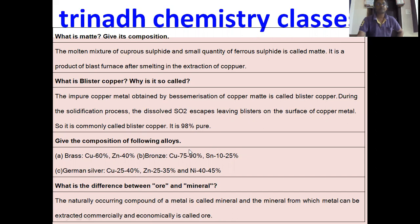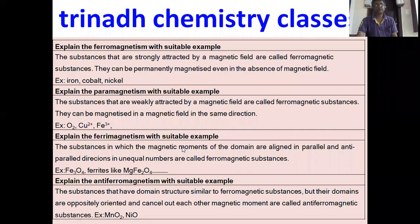Give the composition of the following alloys: brass, bronze, and German silver. What is the difference between ore and mineral? The naturally occurring compound of a metal is called a mineral, and the mineral from which a metal is extracted commercially and economically is called an ore.